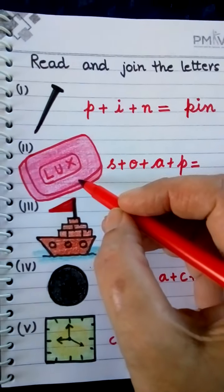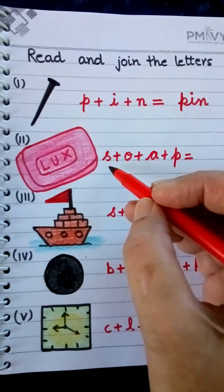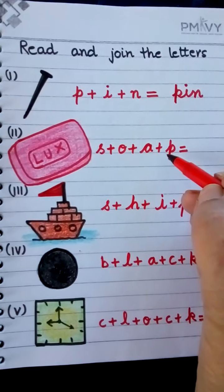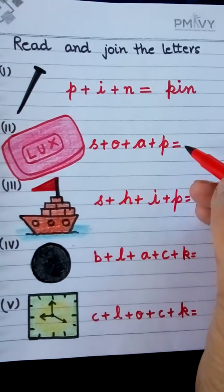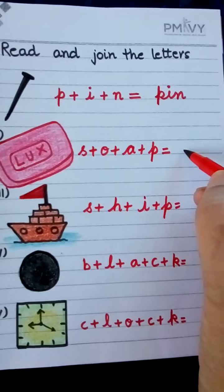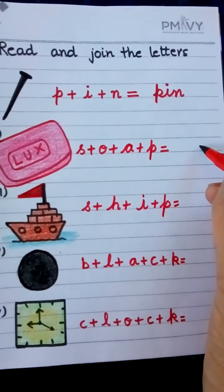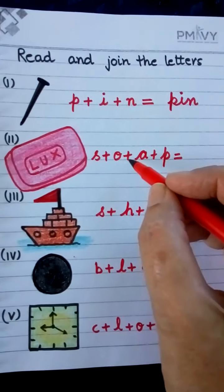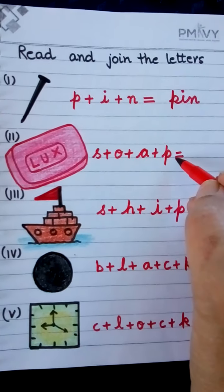This is Soap. S-O-A-P. Soap. We will write here S-O-A-P. Soap. This is a four-letter word.